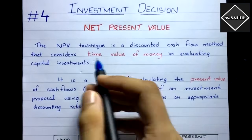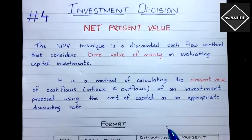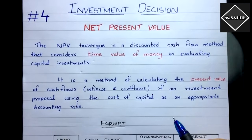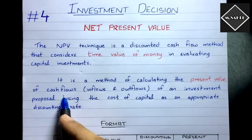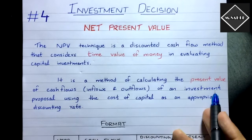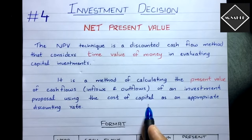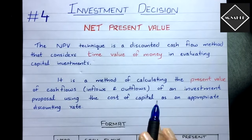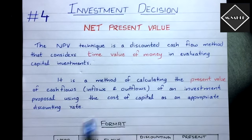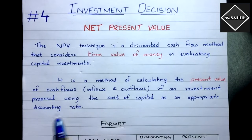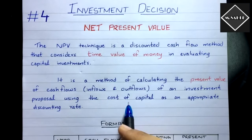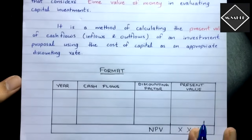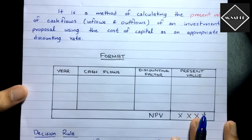Now let's go back to net present value. NPV is a method of calculating the present value of cash flows — inflows and outflows — of an investment proposal using the cost of capital. Here we use the cost of capital or weighted average cost of capital as the appropriate discounting rate, and it will be given to you in the question.